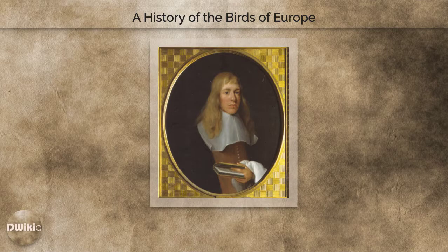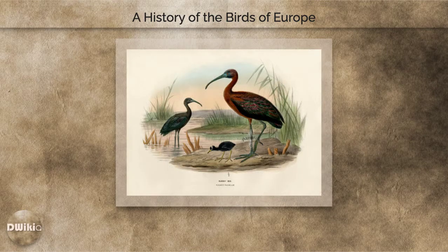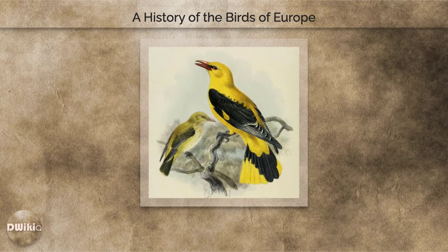Sharpe, then librarian of the Zoological Society of London, had worked closely with Gould and wanted to expand on his work by including all species reliably recorded in Europe, North Africa, parts of the Middle East, and the Atlantic archipelagos of Madeira, the Canary Islands, and the Azores. He lacked the resources to undertake this task on his own, so he proposed to Dresser that they work together on this encyclopedia, using Dresser's extensive collection of birds and their eggs and network of contacts.